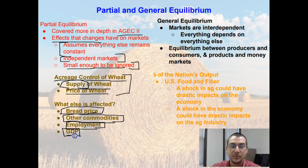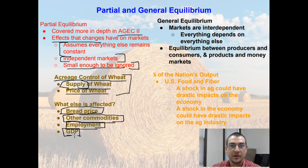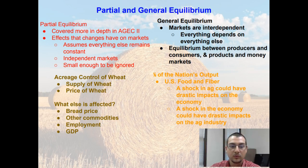It might also be affecting GDP — the gross domestic product, which is the sum of all final goods and services — so GDP is actually going to be affected as well. But with partial equilibrium, we are going to ignore all of these other markets. We're going to look at just how wheat affects wheat, and all these markets are treated as independent of each other.